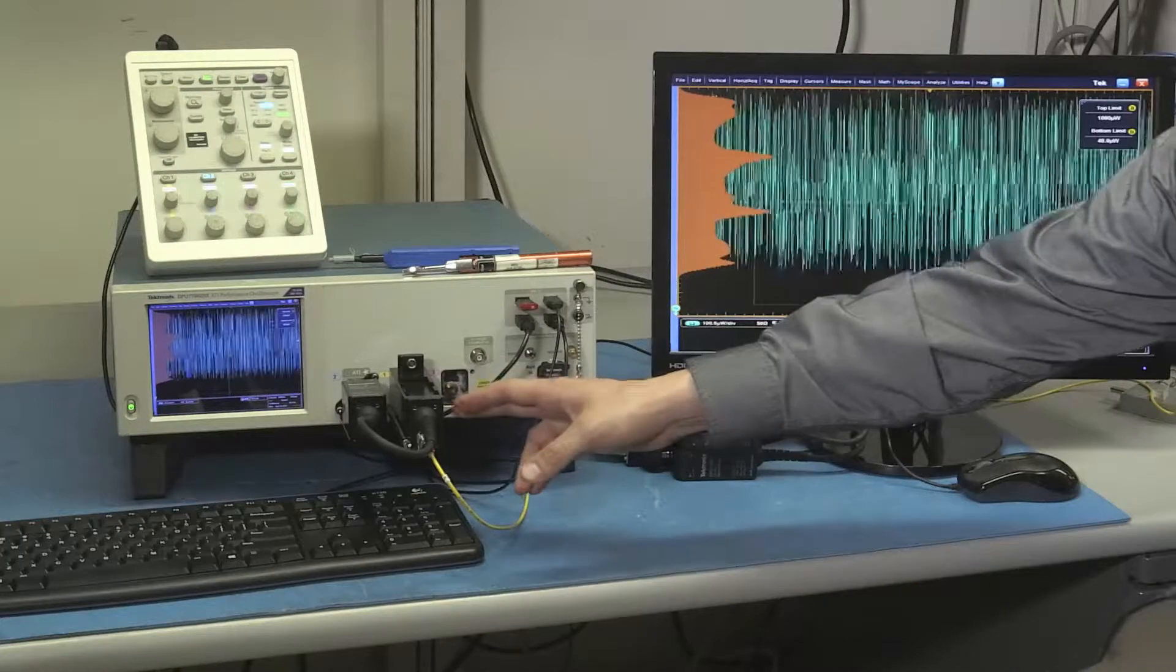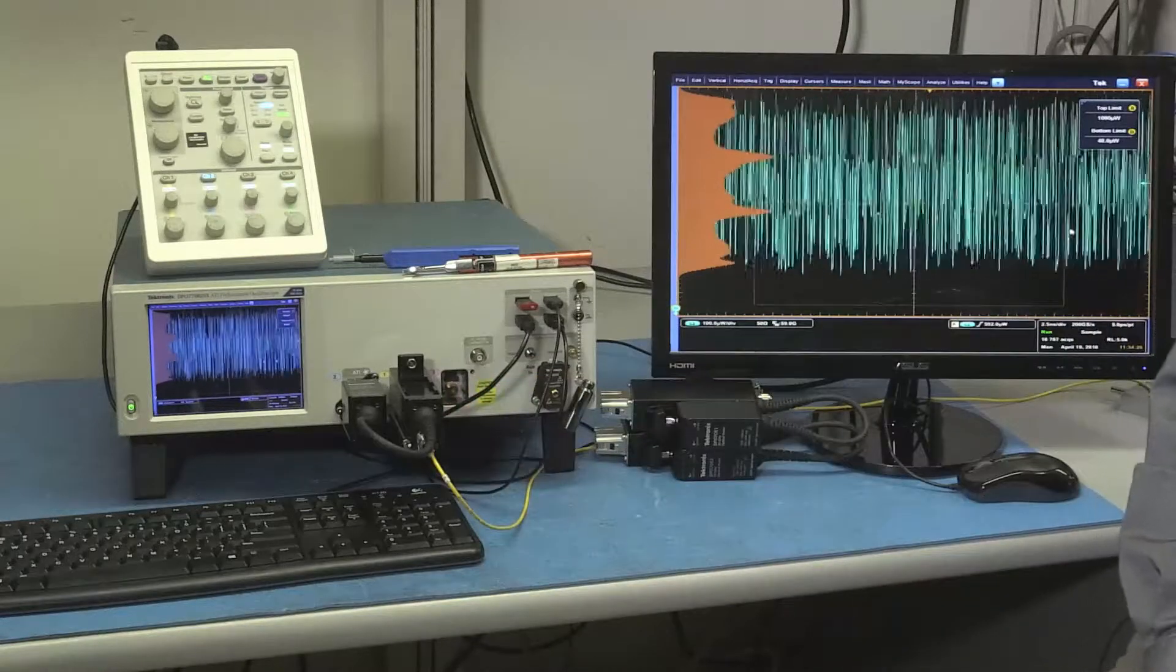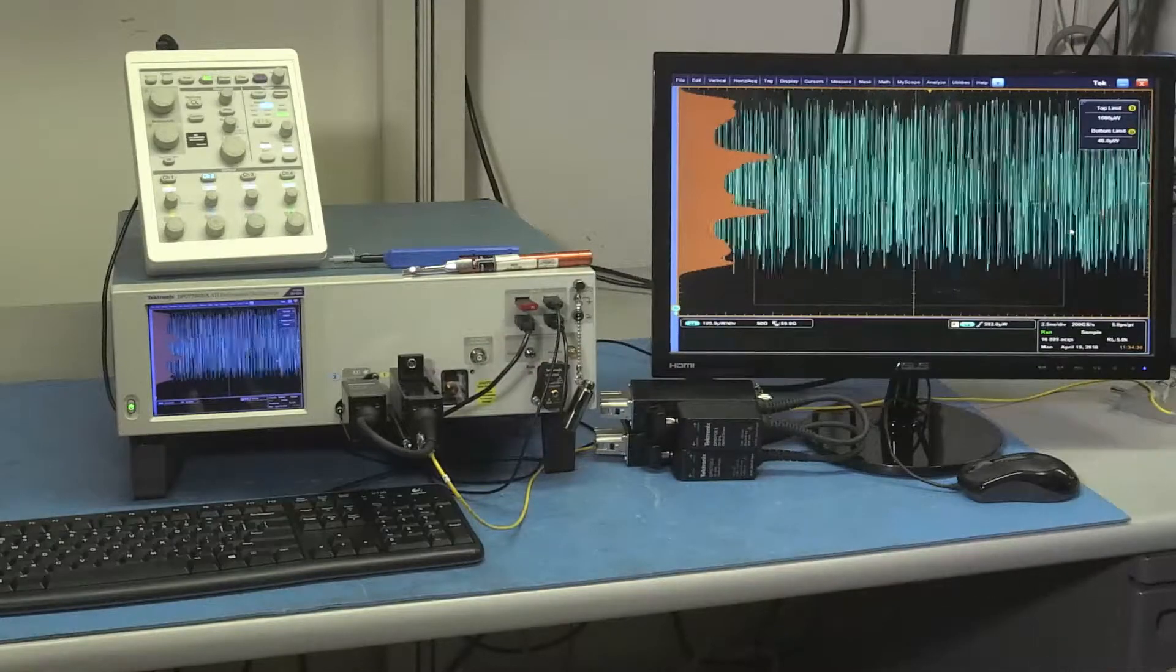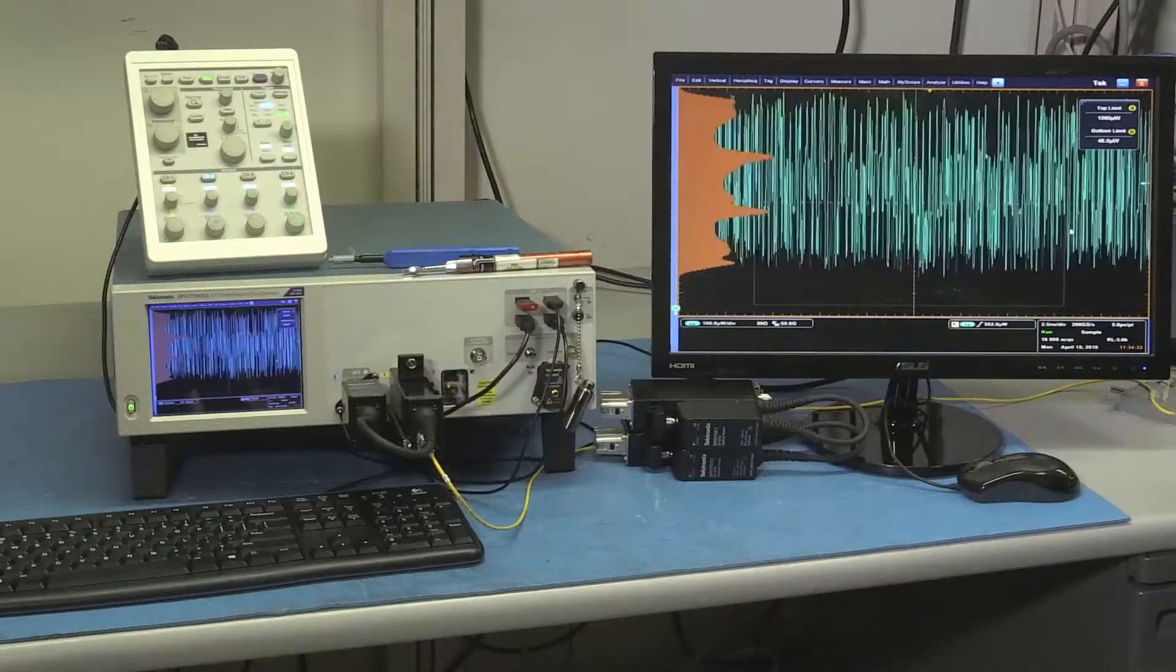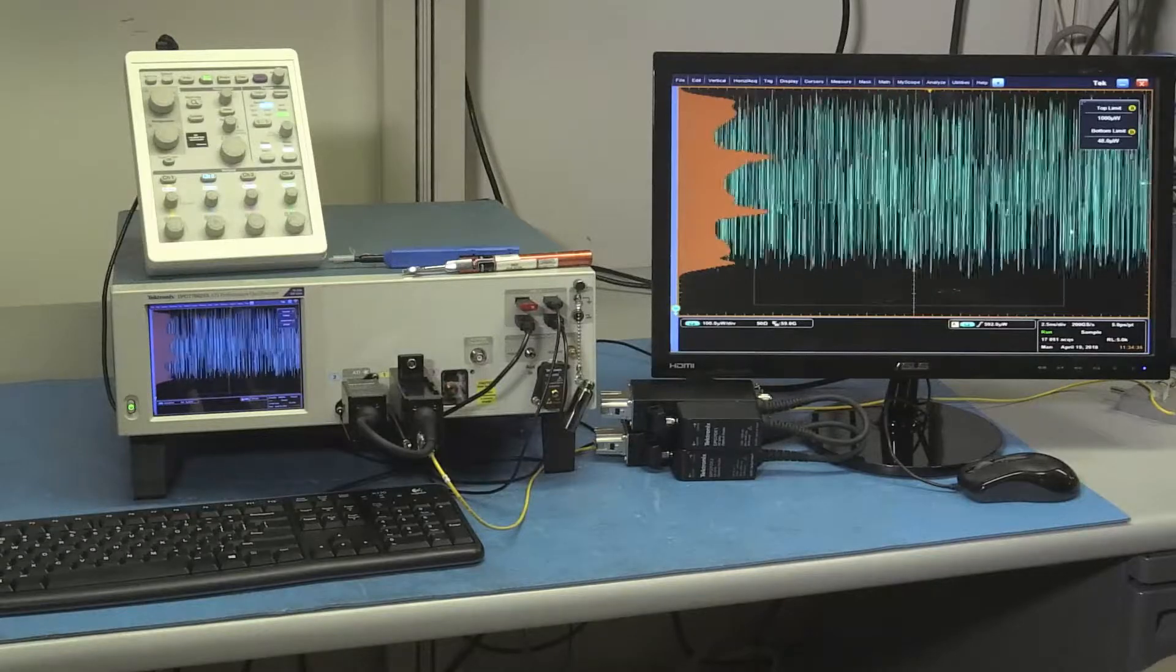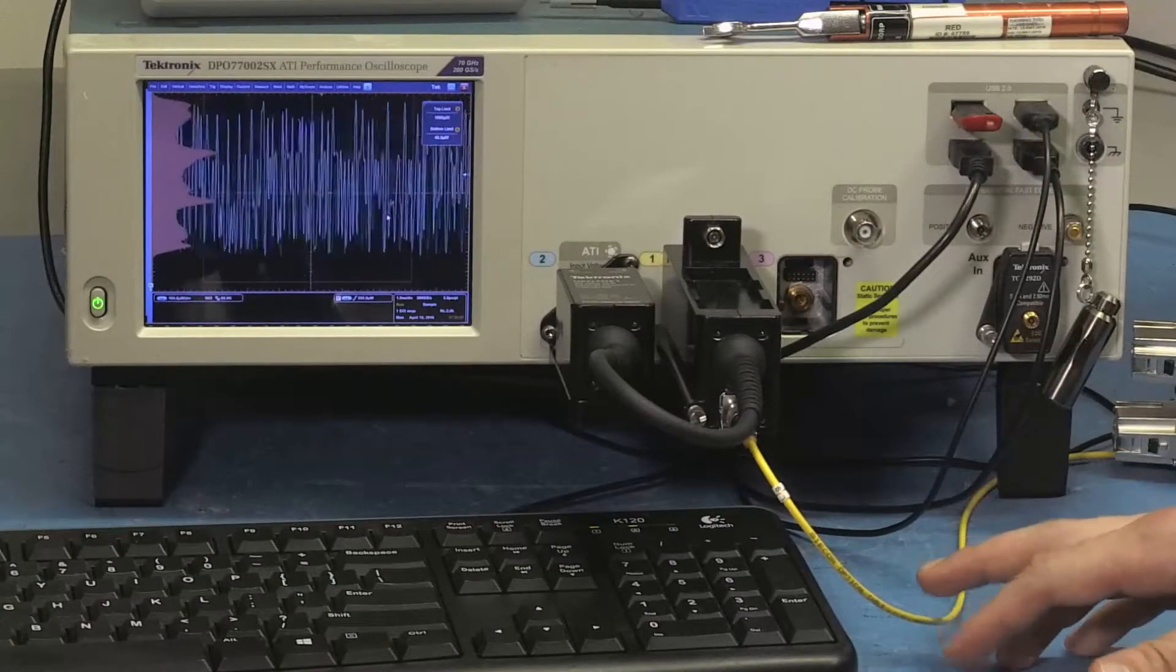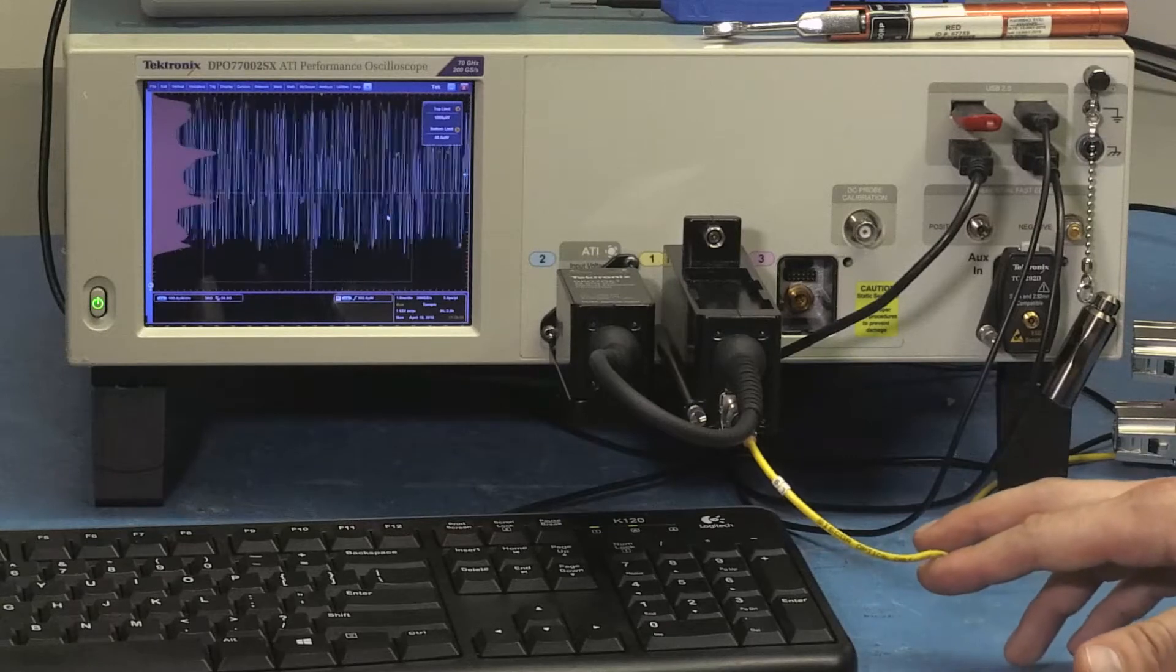We have our DP07OE1, our 33 gigahertz optical probe installed on channel A of our 70 gigahertz DSA-X oscilloscope that samples at 200 giga samples a second. As you can see there's just an optical signal going in here, no trigger connection necessary like on a sampling scope.